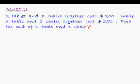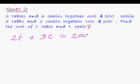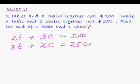So, two tables and three chairs together cost $200. So, our first equation would be 2t plus 3c equal to 200. And similarly, the second equation would be 3t plus 2c equal to 250. So, we have successfully created the two simultaneous equations. Now, just solve them.